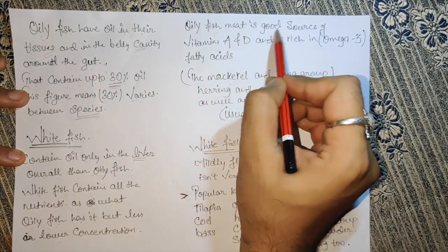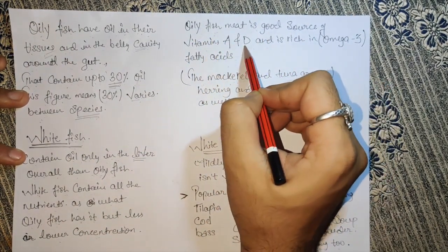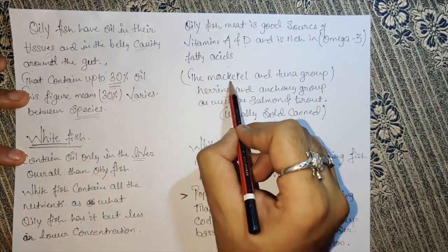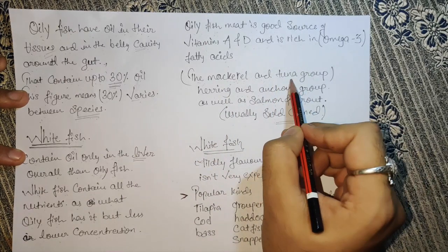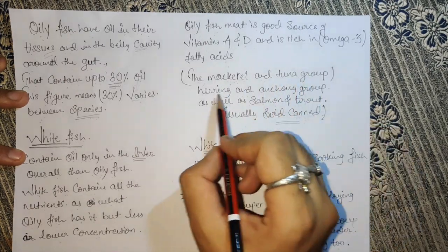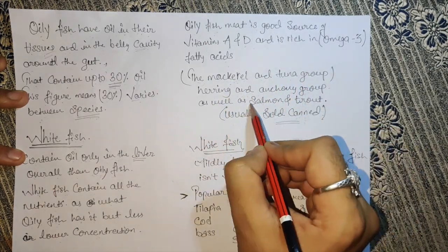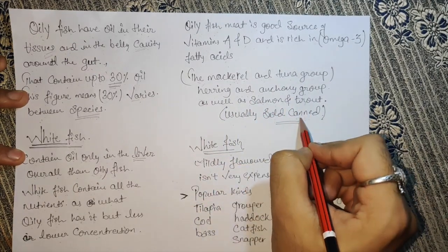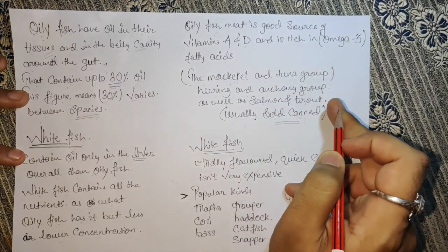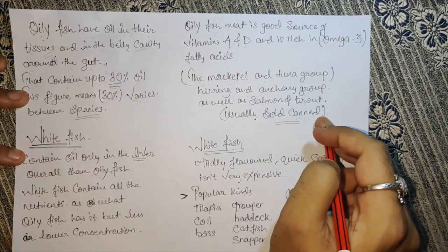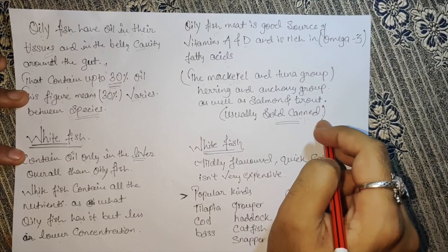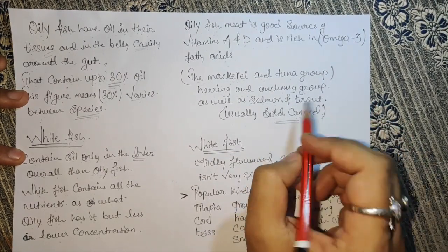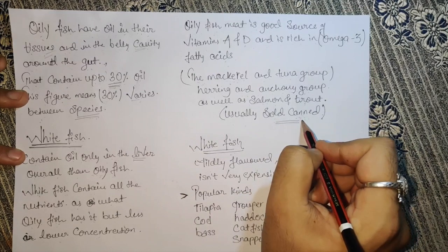Oily fish is a good source of vitamins A and D and is rich in omega-3 fatty acids. Examples include the mackerel and tuna group — which are very expensive fish — as well as the herring and anchovy group, and salmon and trout. They are usually sold canned because they are expensive and contain oil and vitamins, so they are preserved to prevent spoilage.